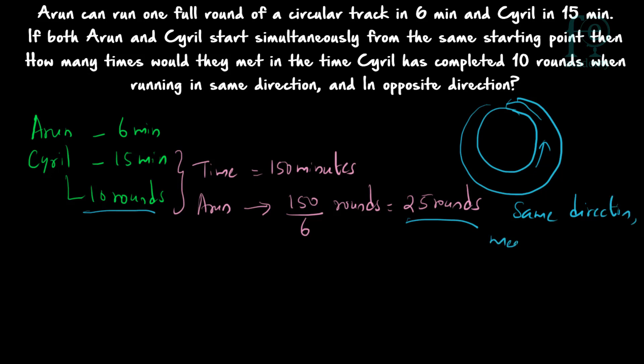Cyril has completed 10 rounds and Arun has completed 25 rounds. So when running in the same direction, they will be meeting 25 minus 10, which equals 15 times. For every round which Arun has run more than Cyril, they will meet, so the answer for the same direction is 15 times.